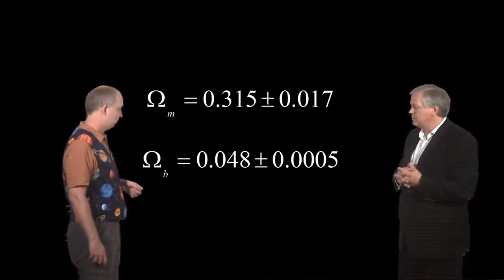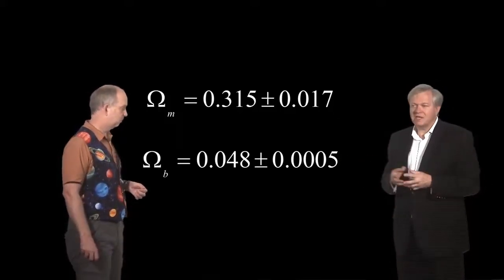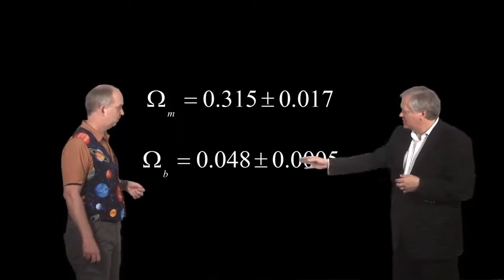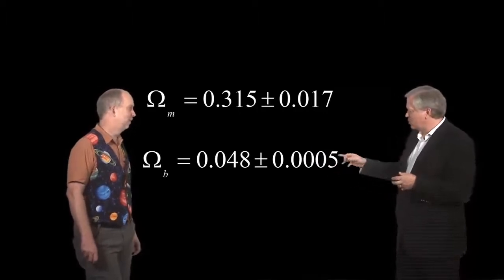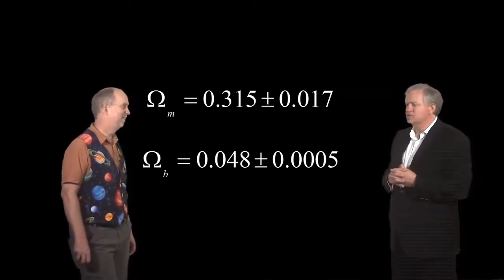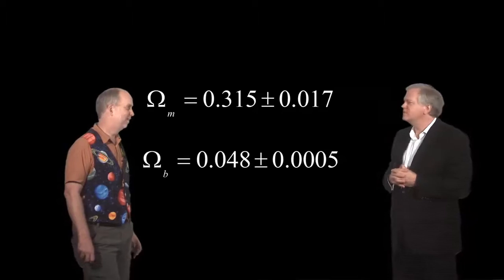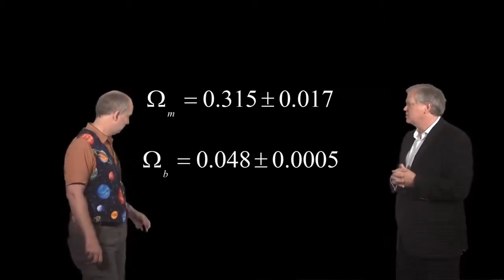And then the other thing we can measure out is how many baryons, or the atoms, we're used to. Look at the exquisite precision that we can do that. It was 0.048 and then three zeros and a five as the uncertainty. Remarkable. I would have never thought we could have done anything this well.